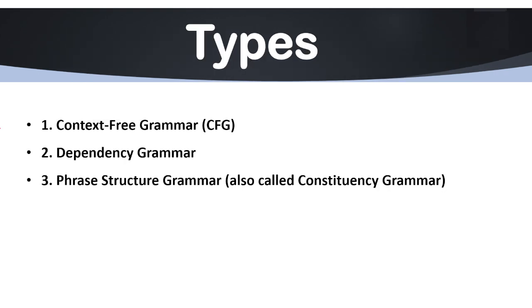The first type we have is context-free grammar, simply known as CFG. Another type is dependency grammar, and the third type is phrase structure grammar, simply known as constituency grammar.